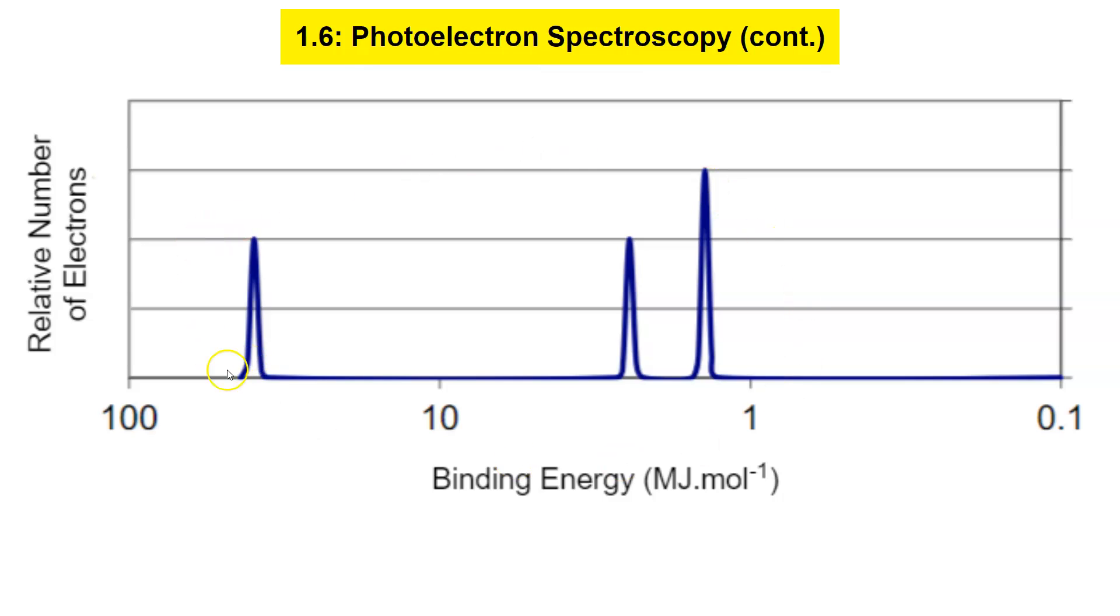Using this readout here, we know that there's two electrons here in our first peak. There's two electrons here in our second peak, so that's four. And then we have three right here, four plus three would be seven. So, we would know that this is a spectrum from nitrogen. And that's how we read these.